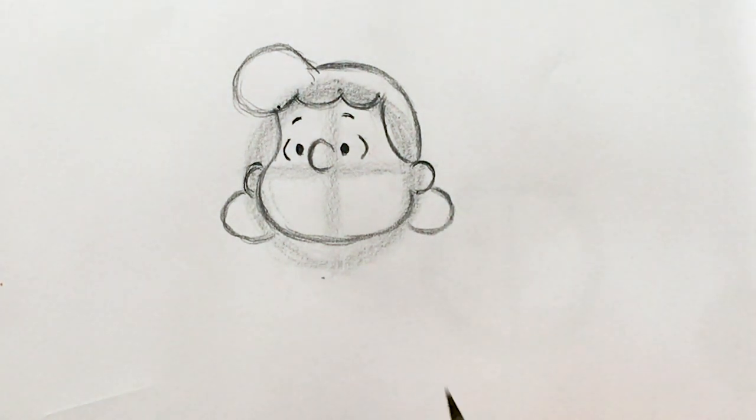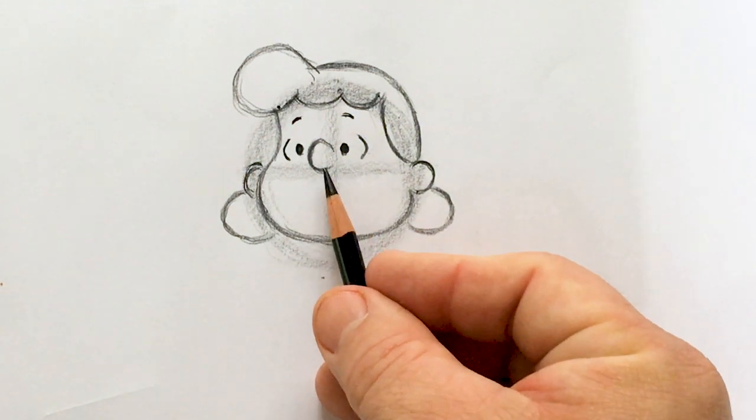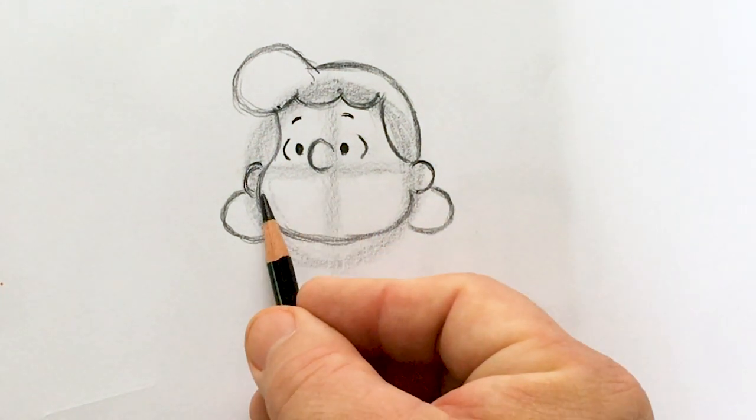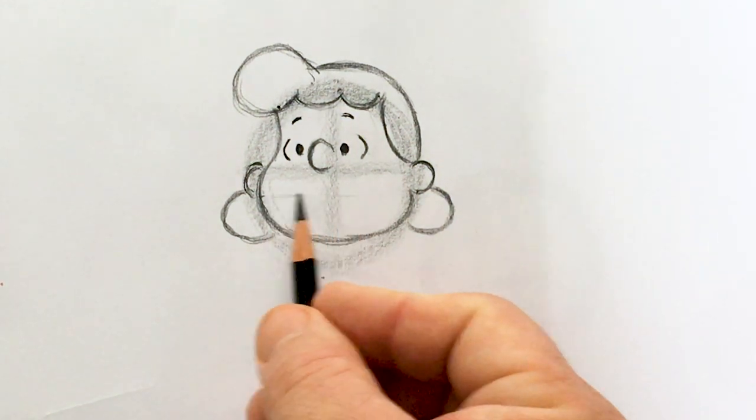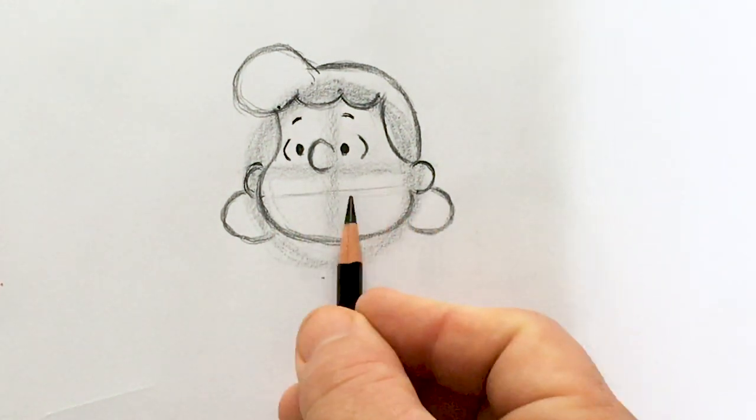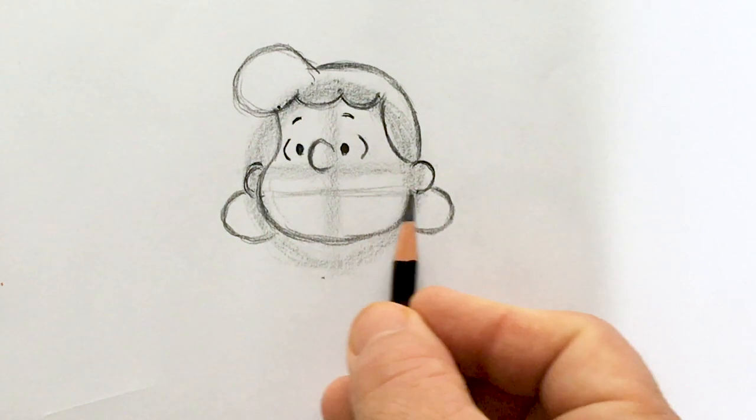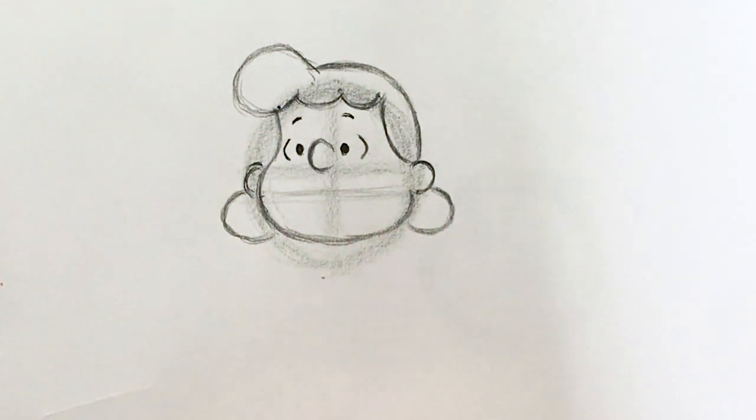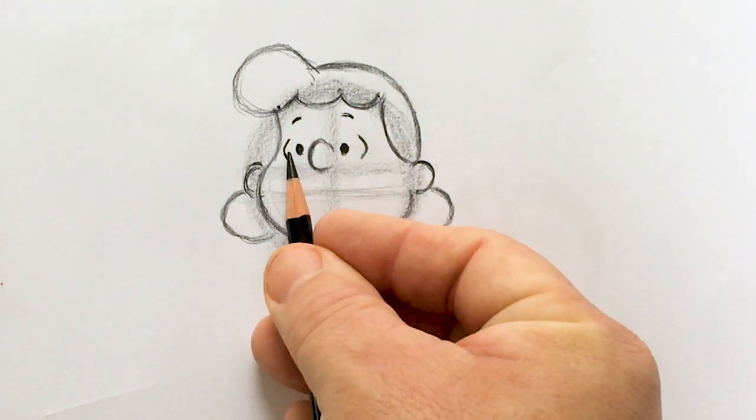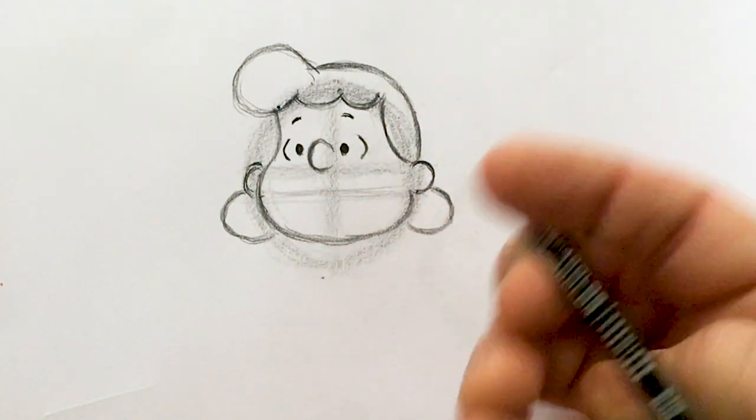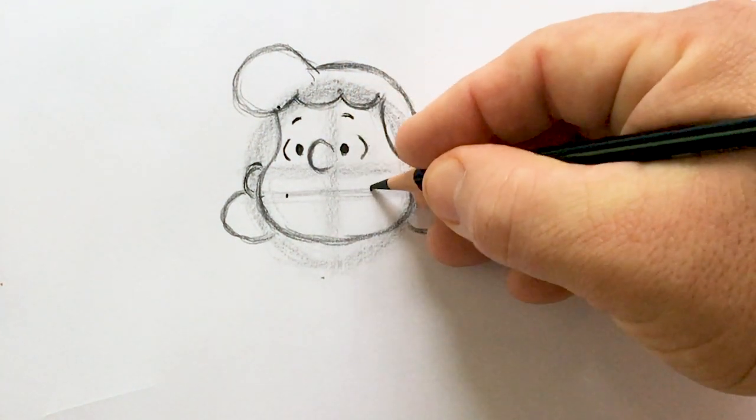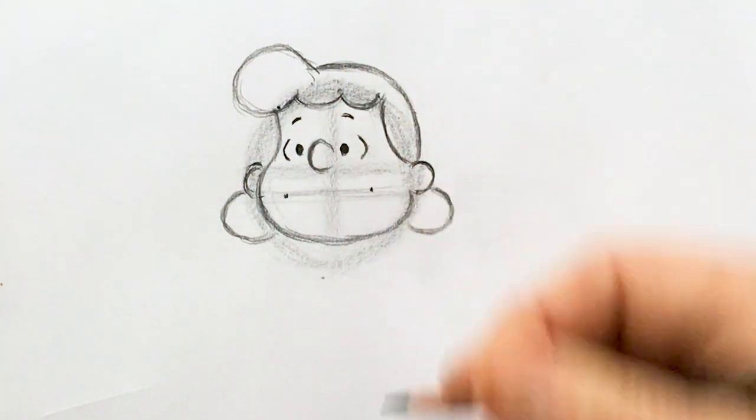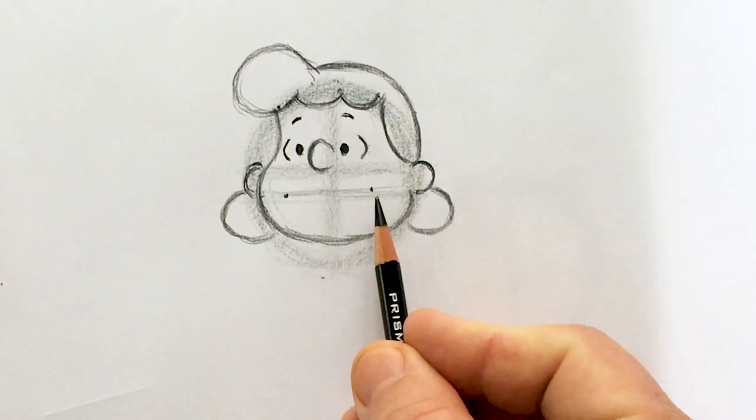Now this is a trick. All Peanuts characters' mouths are in the same spot, right between the bottom of the ears. The nose lines up at the top of the ears. Well guess what gang, that mouth lines up with the bottom of the ears. Straight across here. And Lucy's mouth, it's just as wide as these curves are on the side of her head. Just below that curve there and there. That's for the corners of the mouth.